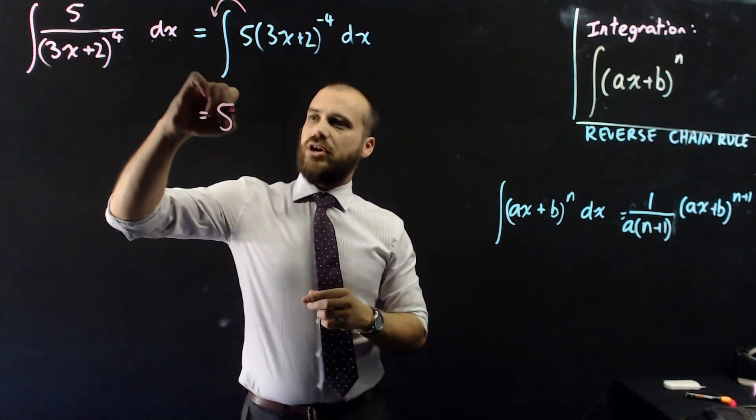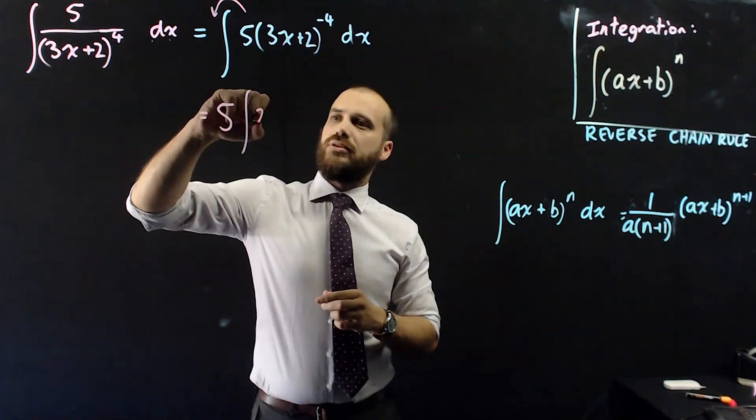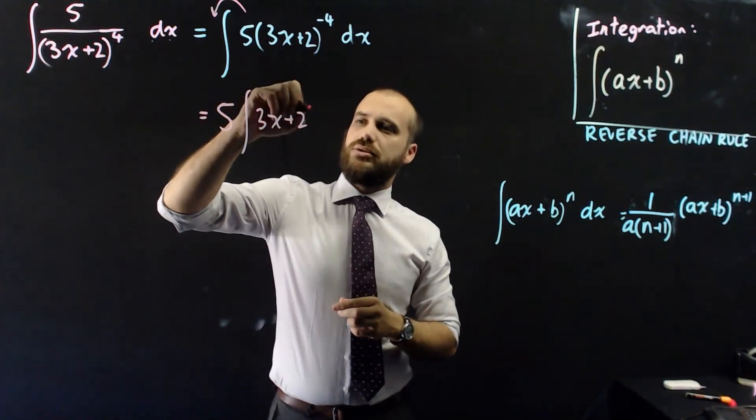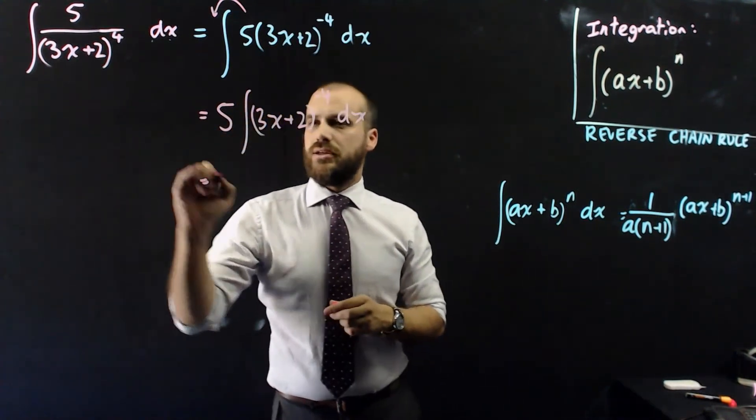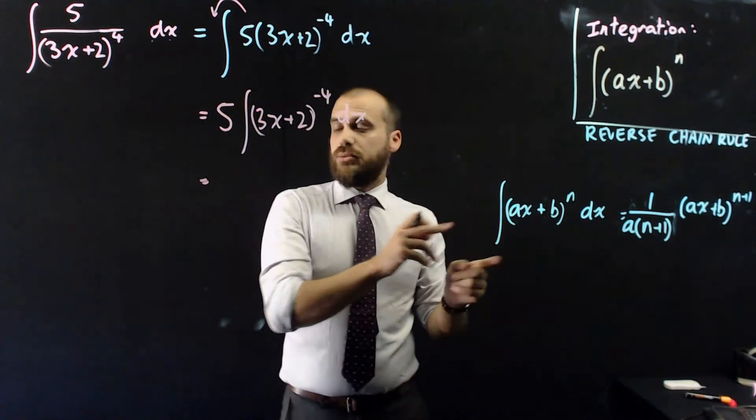So we can say 5 times the integral of 3x plus 2 to the negative 4 with respect to x. And now we can use our formula.